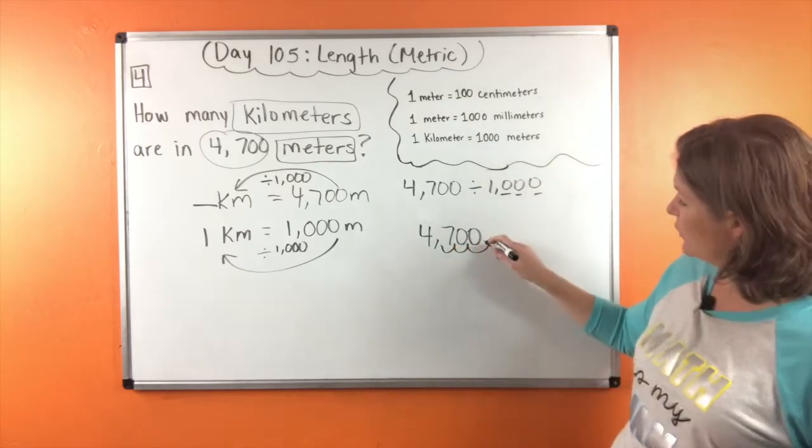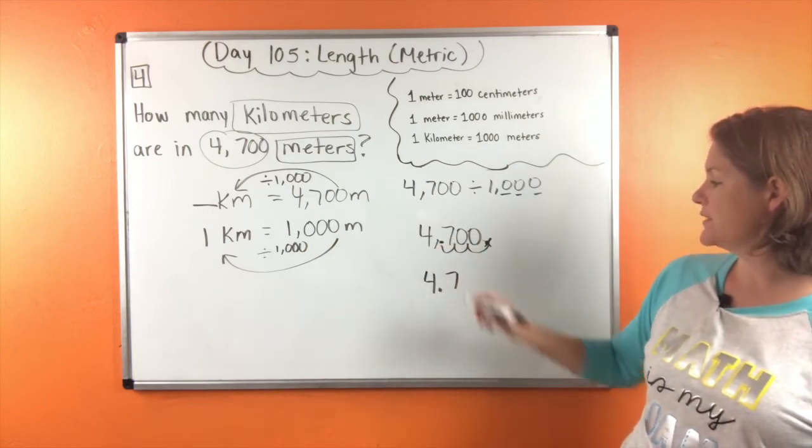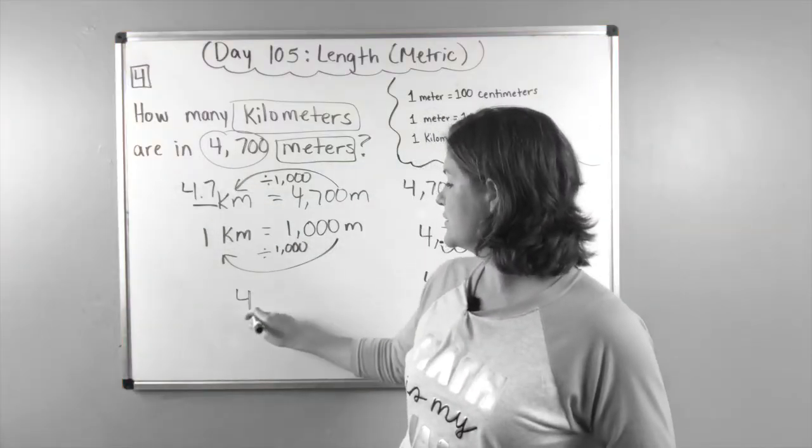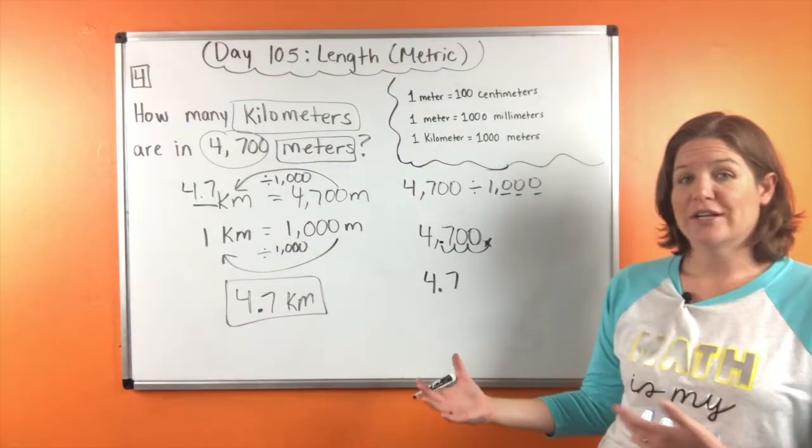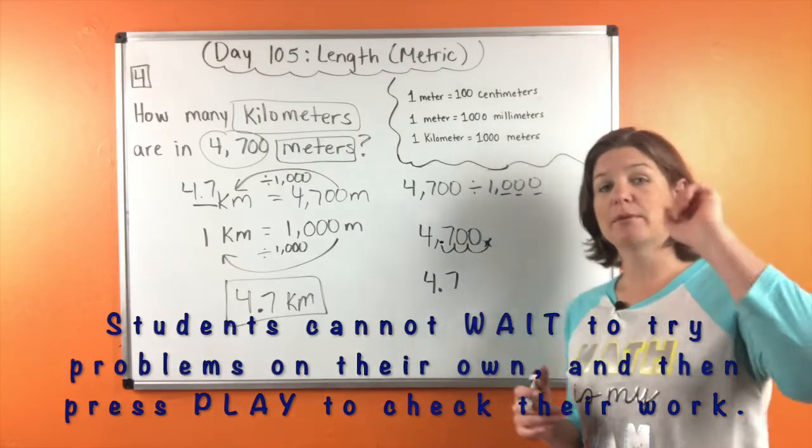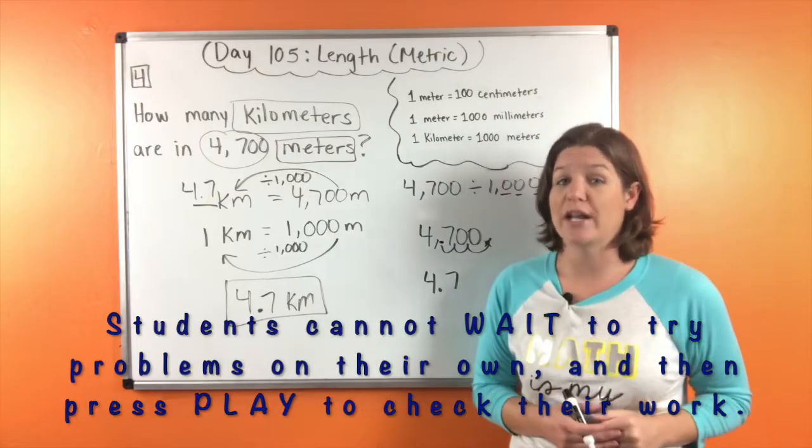So that would be four and seven tenths. So four and seven tenths kilometers is the answer. All right, go ahead and get that copied for number four. And then I would like for you to go ahead and try number five and number six on your own and then come back to check your answers.